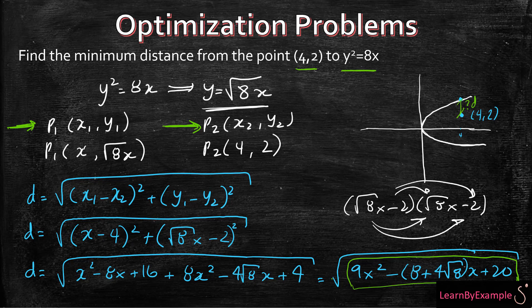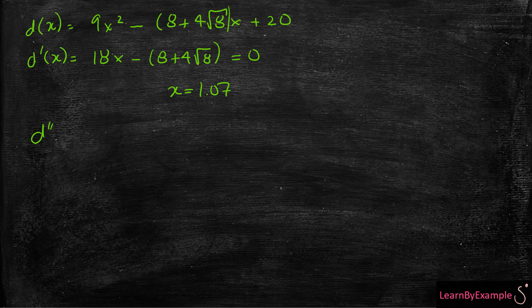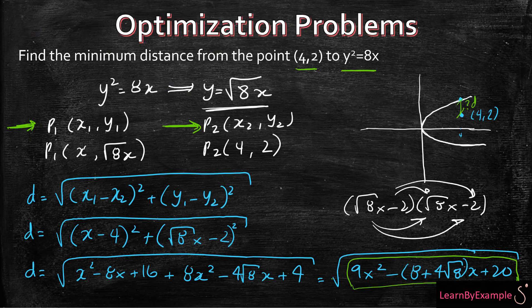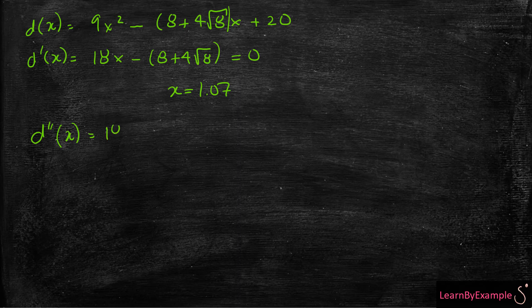Now we have one last check to do. Because we took the derivative, we have to take the second derivative to confirm that is in fact the minimum distance. Remember, the question asks you for the minimum, so we have to make sure that it is greater than 0. So d''(x) in this case is just going to be 18, which is greater than 0, therefore we have a minimum.